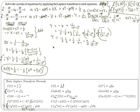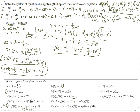And my y that solves the system is negative one-third times the inverse Laplace of one over s, which is one, plus one-third times the inverse Laplace of one over (s minus one), plus four-thirds times the inverse Laplace of one over (s minus one) squared. From the first shifting theorem, that gives e^t, and the inverse Laplace of one over s squared gives t. So here is my y that solves the system.